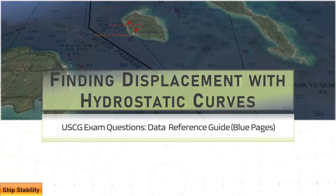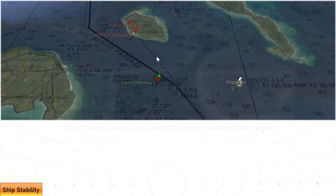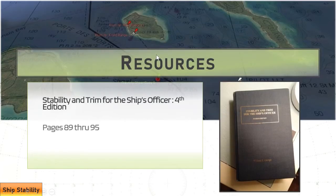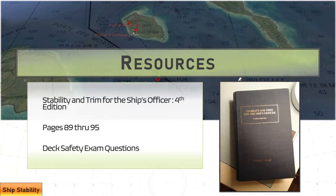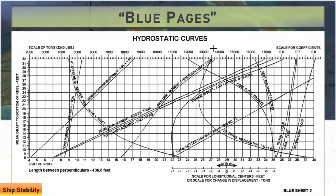Welcome to Oceans Unlimited. We're bringing you another in our series covering Coast Guard license exam prep. We're going to look at stability questions that ask you to find a vessel's displacement using a hydrostatic curve. This diagram will be provided to you during the exam as part of the data reference guide, also known as the blue pages. Our resources come from Stability and Trim for the Ship's Officer, fourth edition, pages 89 through 95, and today's exam questions are from the deck safety portion.